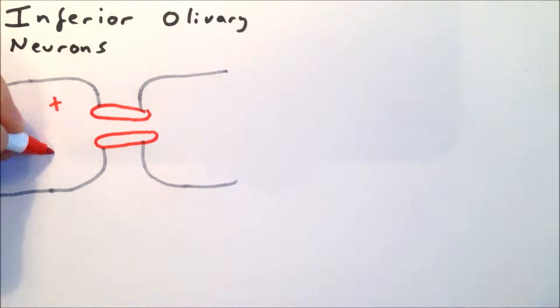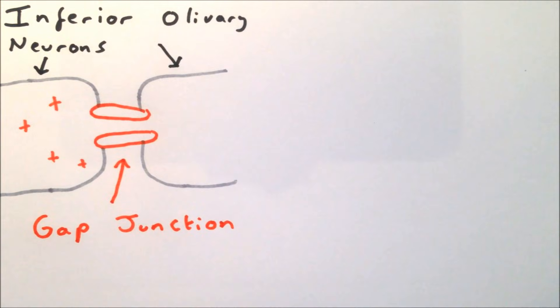Another special property of inferior olivary neurons is that they are connected by gap junctions. These are ion channels which directly connect two cells, meaning that unlike normal synapses which use chemical neurotransmitters, current can flow directly between these neurons.